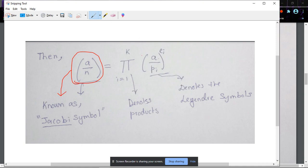Instead of summation—like how you use summation from 1 to n—this is basically your summation, but now we are using products, so we use pi. And you have a upon p_i, which is basically your Legendre symbols.